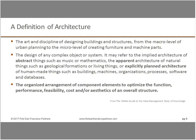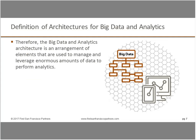The essential definition is the organized arrangement of component elements optimized for function, performance, feasibility, and cost. Aesthetics are in the definition, though cost, feasibility, and functionality are really what matter. The definition for big data analytics architecture is those arrangements of elements and things that manage and leverage enormous amounts of data to perform analytics. That's simple — but maybe it's not that simple, or else this would be a really short presentation. We do have to avoid going overboard.